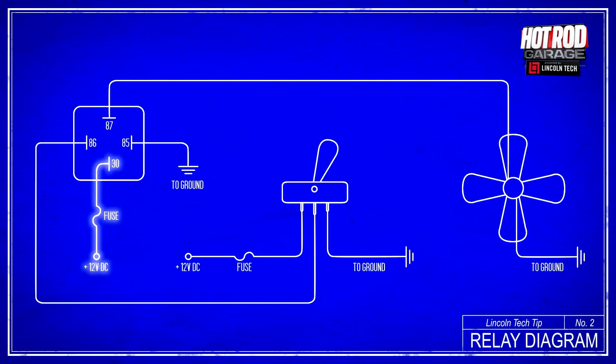A heavier gauge at least 12 gauge wire with a fuse would come off the battery and go to post number 30.